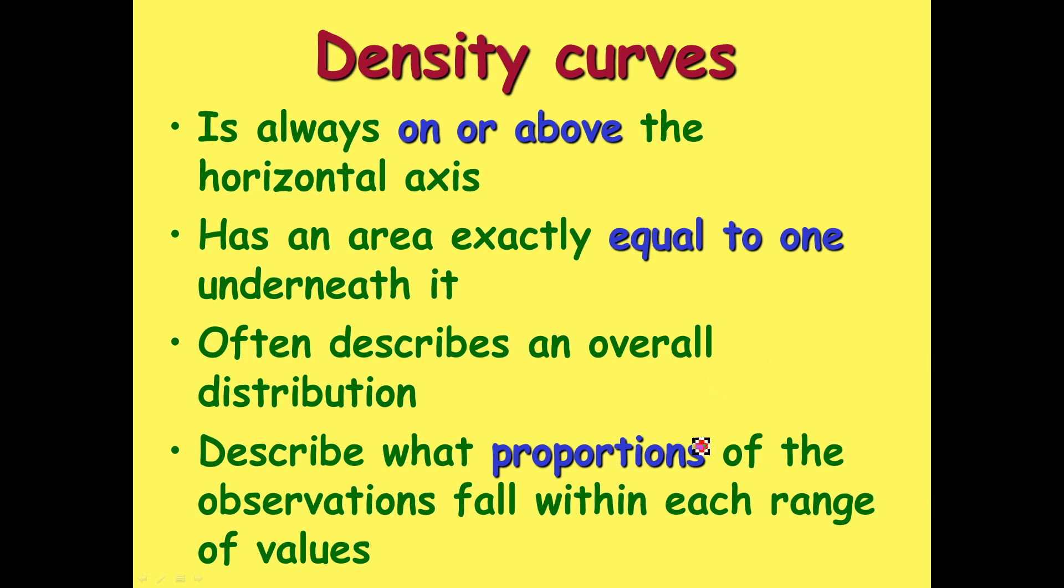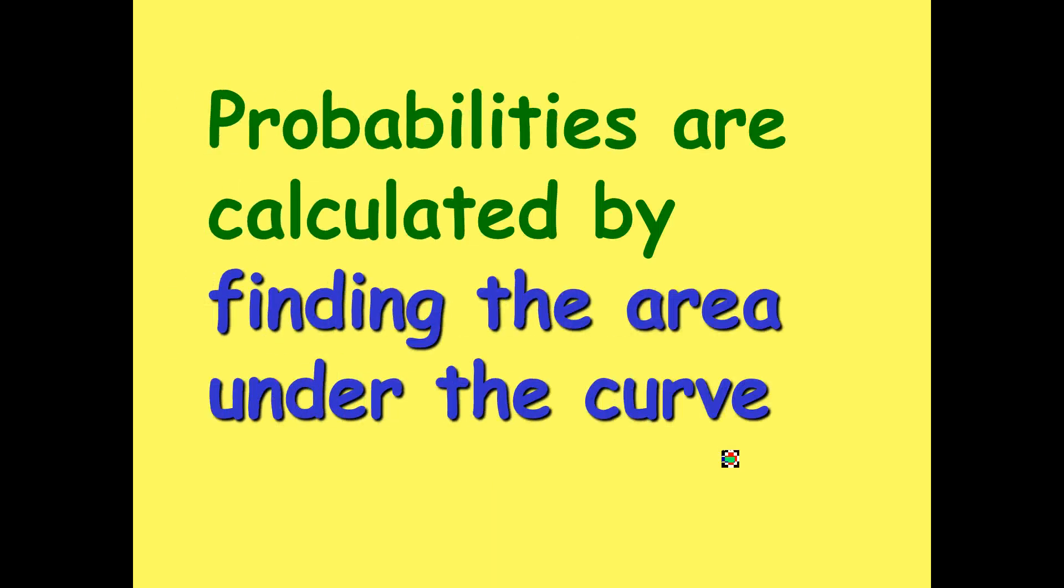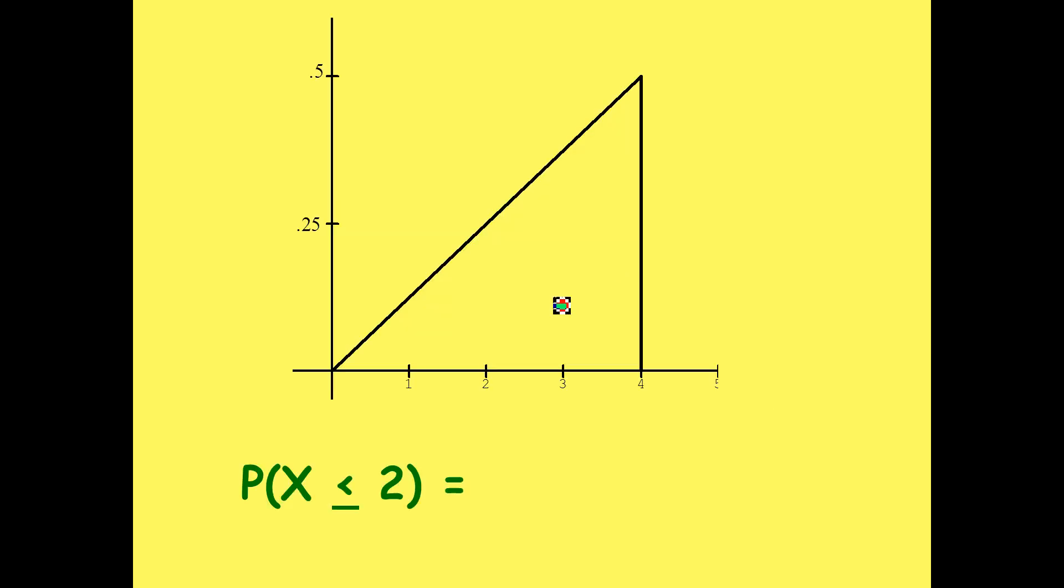How do we find the probability of some event occurring, or some value? Simple. We simply need to find the area under the curve. I know this is a scary thing to do in calculus, but in AP statistics they make it really easy for you because they give you nice, small, easy shapes. So let's try it.